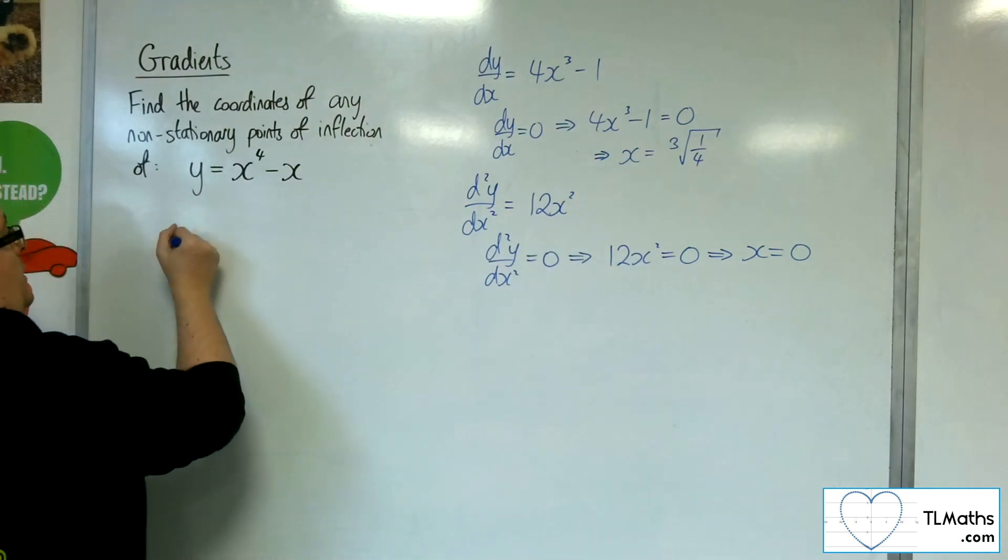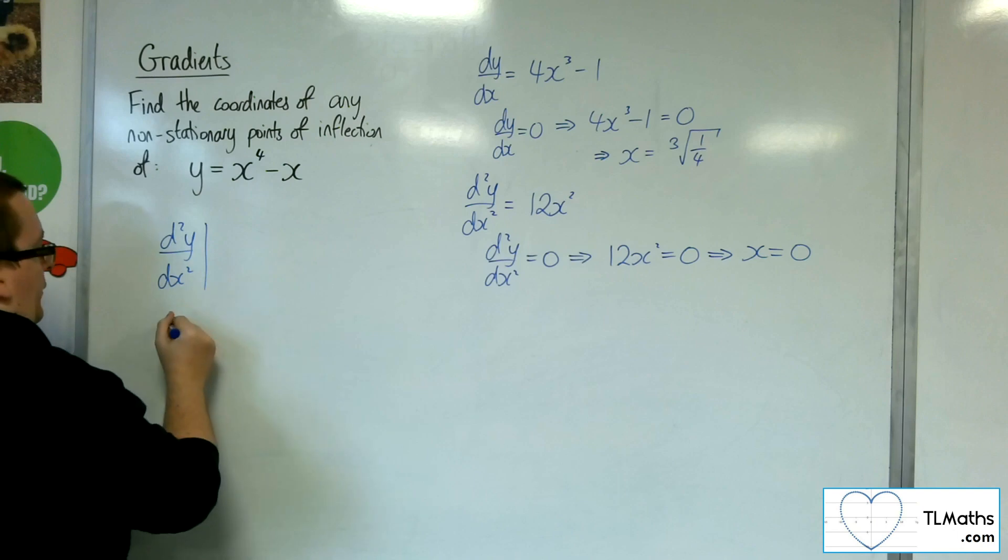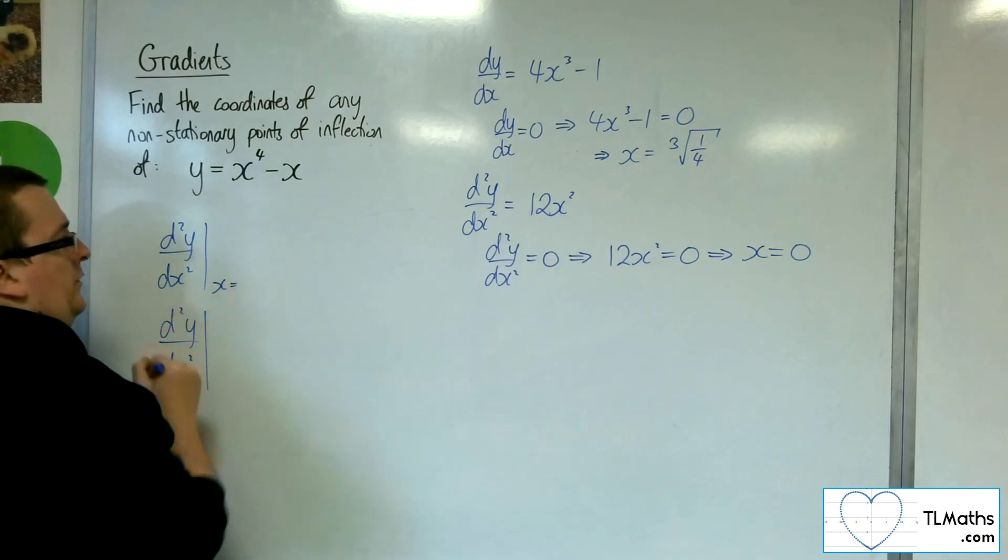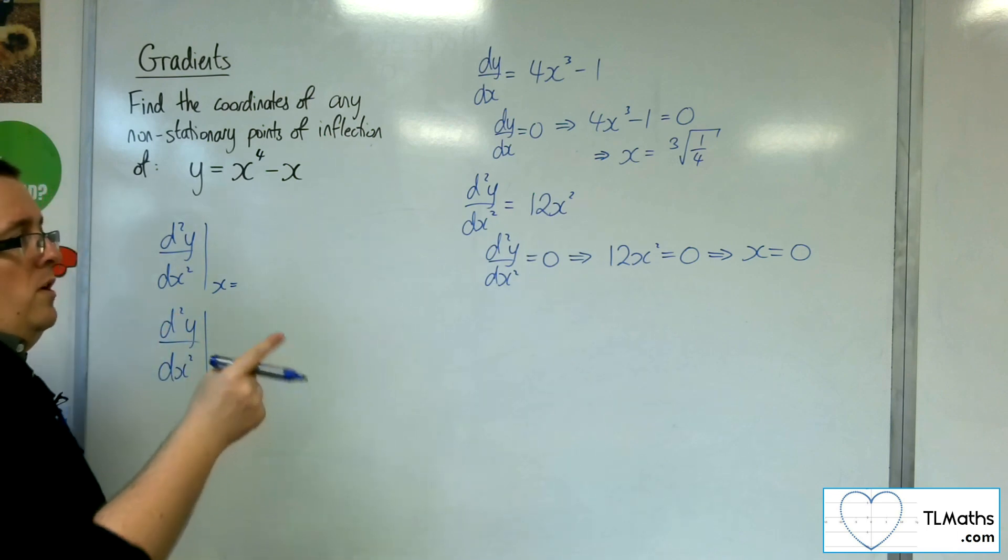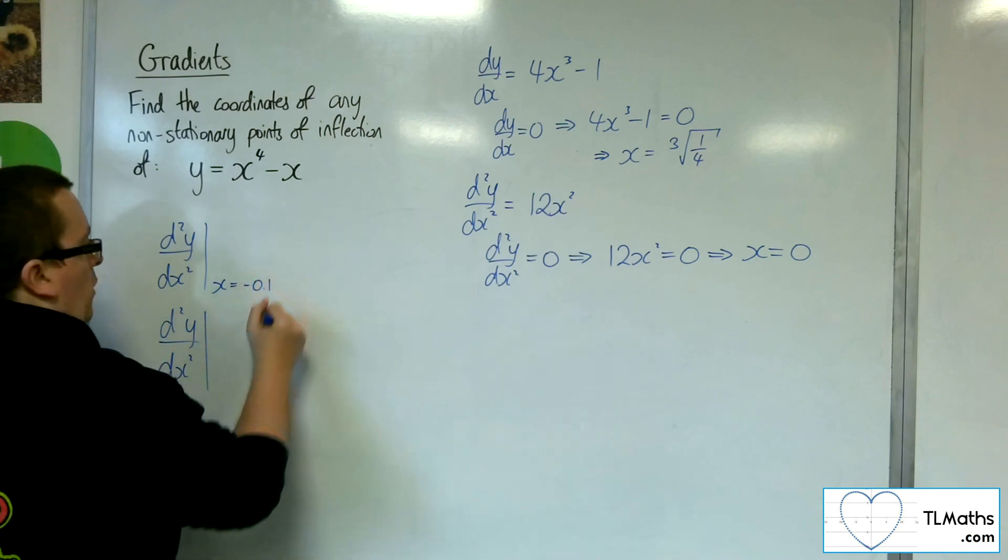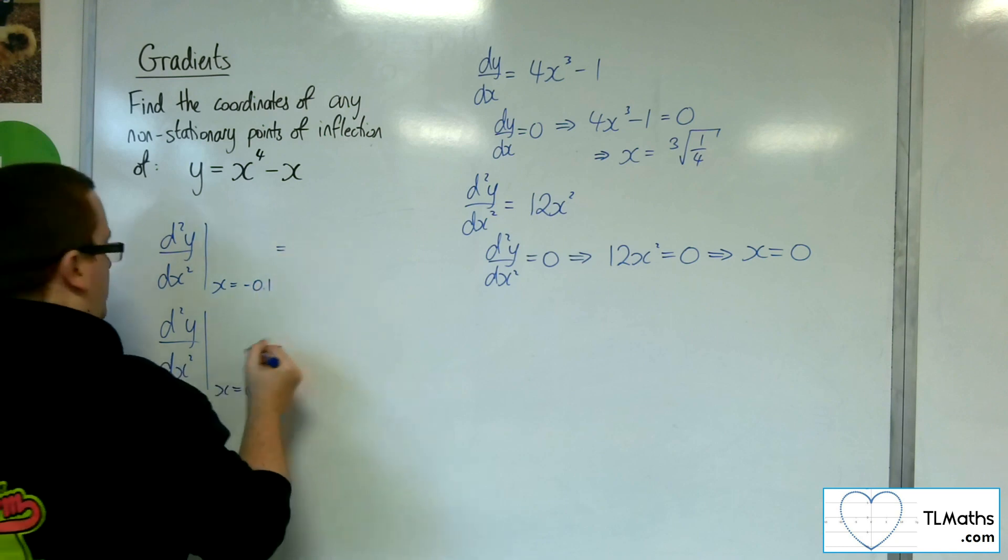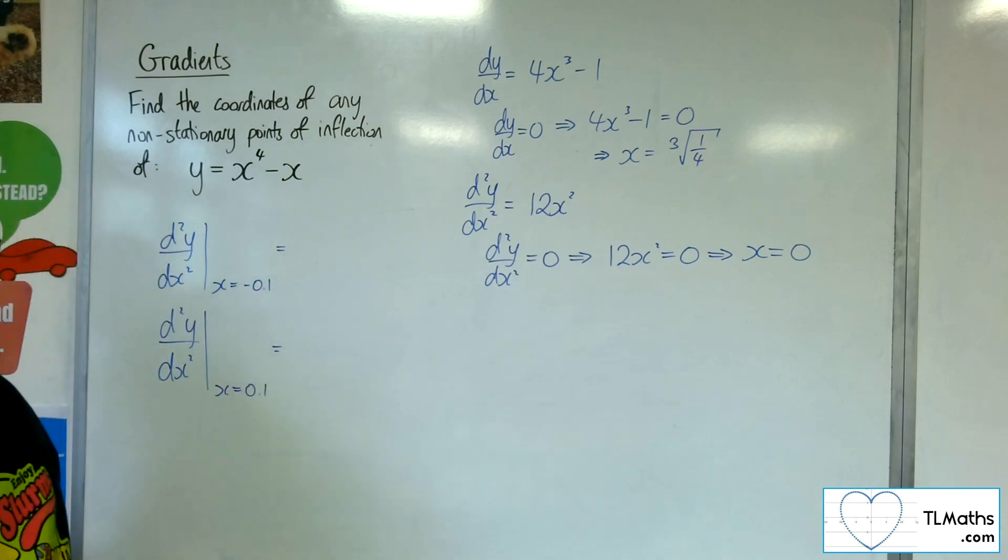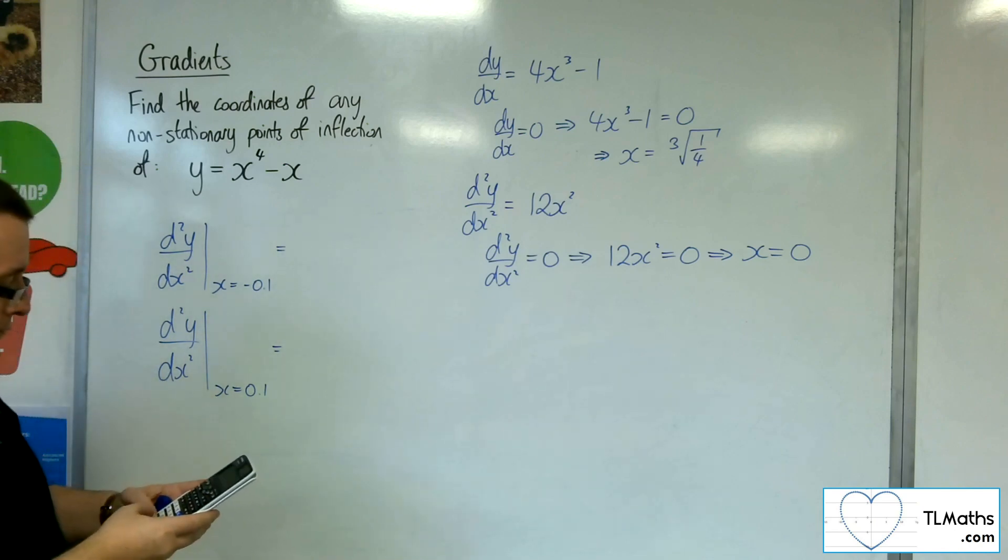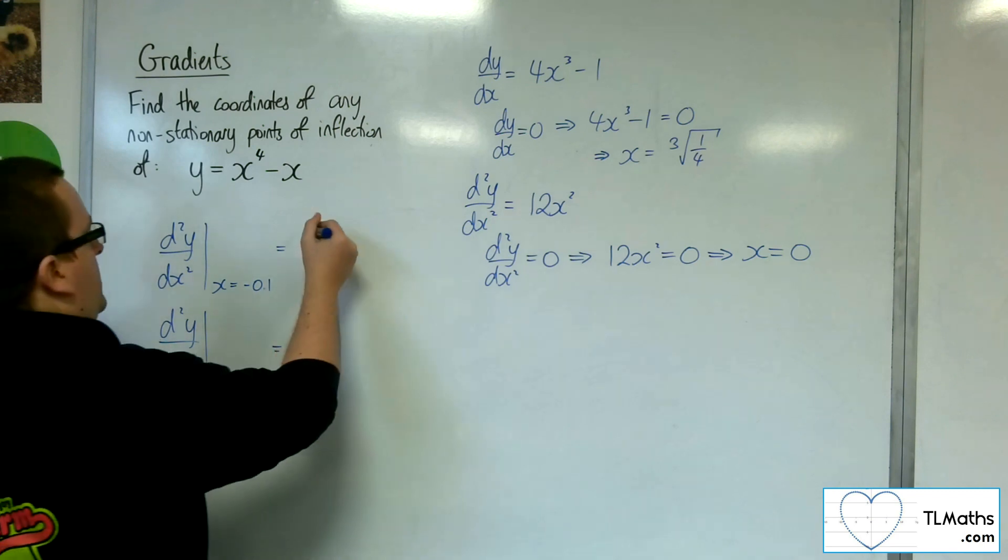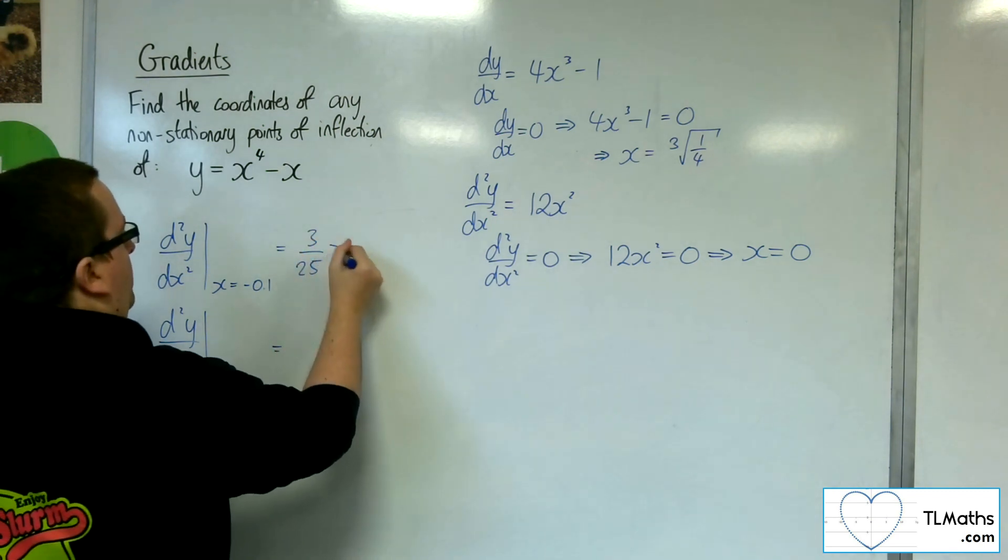So we need to look at the second derivative either side. So when x is 0, let's try minus 0.1 and 0.1. Substitute those points into the second derivative, so 12 lots of that squared, so we get 3/25, that's positive.